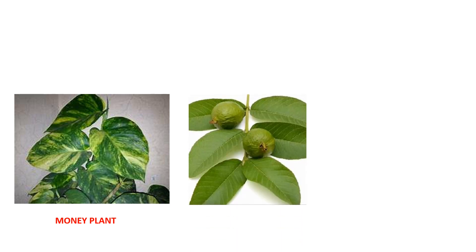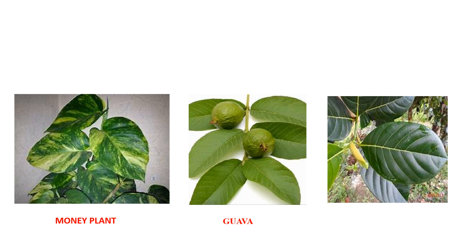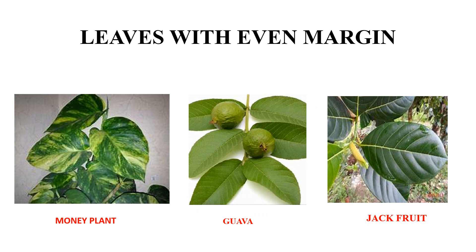Observe this picture. It is a money plant. How is the margin or boundary of this leaf? You see that these leaves are smooth and even. See another example: guava plant. Leaves of guava also have an even margin. Another example: leaf of jackfruit tree. It is also having even margin. These are some examples of leaves having even margin.